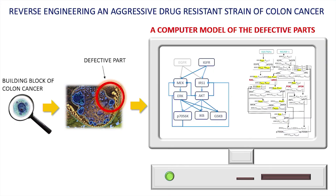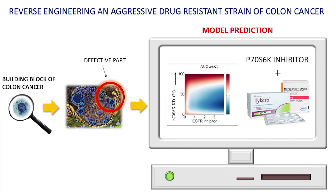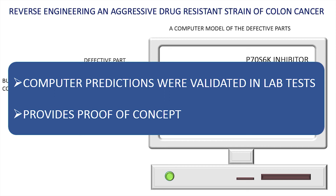We built a computer model of a small part of the building block of this particular colon cancer, which had some damaged components in it. Using the model, we predicted that the combination of two medicines will be effective in treating this particular type of colon cancer. We then performed rigorous biological experiments in our labs which validated this prediction. This provides a proof of concept that you can identify treatment for very hard-to-treat cancer by reverse engineering the building blocks of tumor.